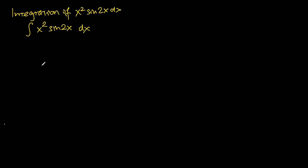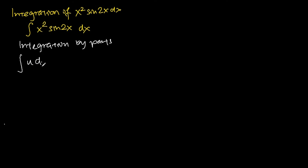For this particular problem we will use a technique called integration by parts. The integration by parts formula is as follows: we take the integral of u dv, which equals u·v minus the integral of v du. To find v we integrate dv, and to find du we differentiate u.